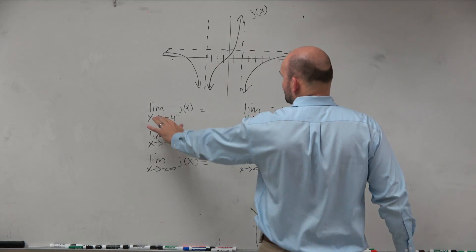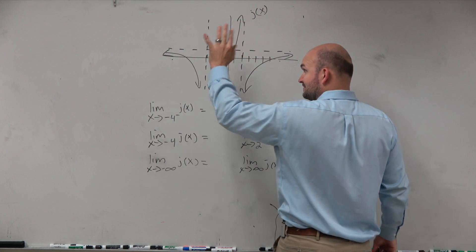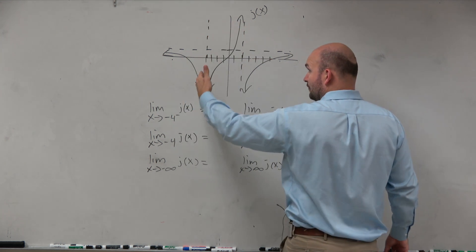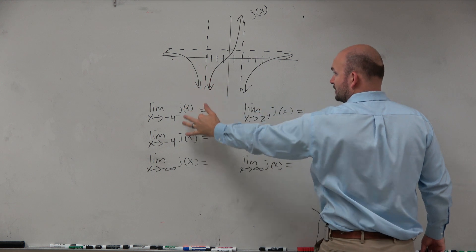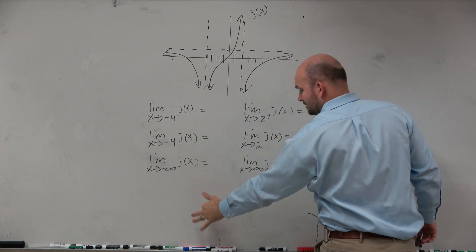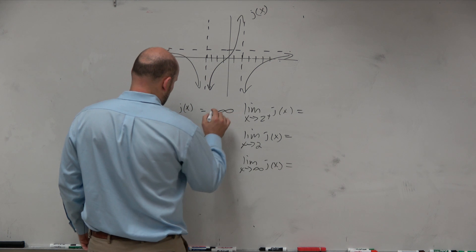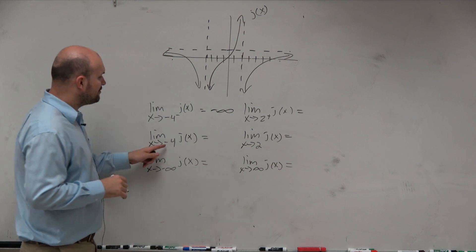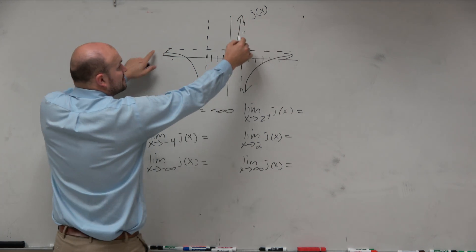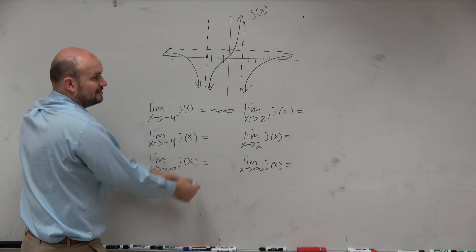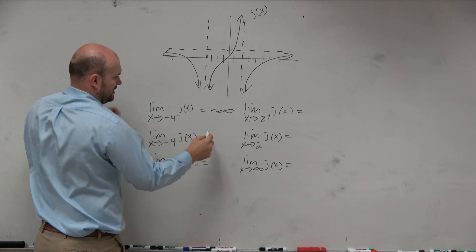So the limit as x approaches negative 4 from the left — here's negative 4. As we come to approach negative 4 from the left, we're approaching negative infinity. As we approach negative 4 from both the left and the right, we're approaching negative infinity.